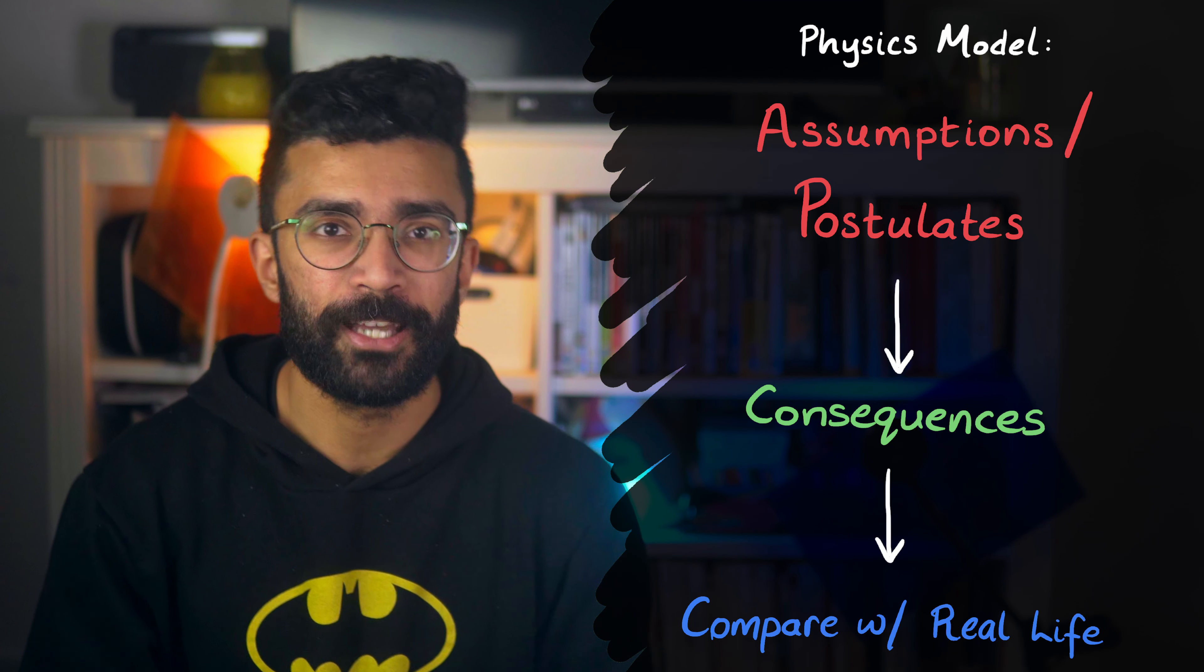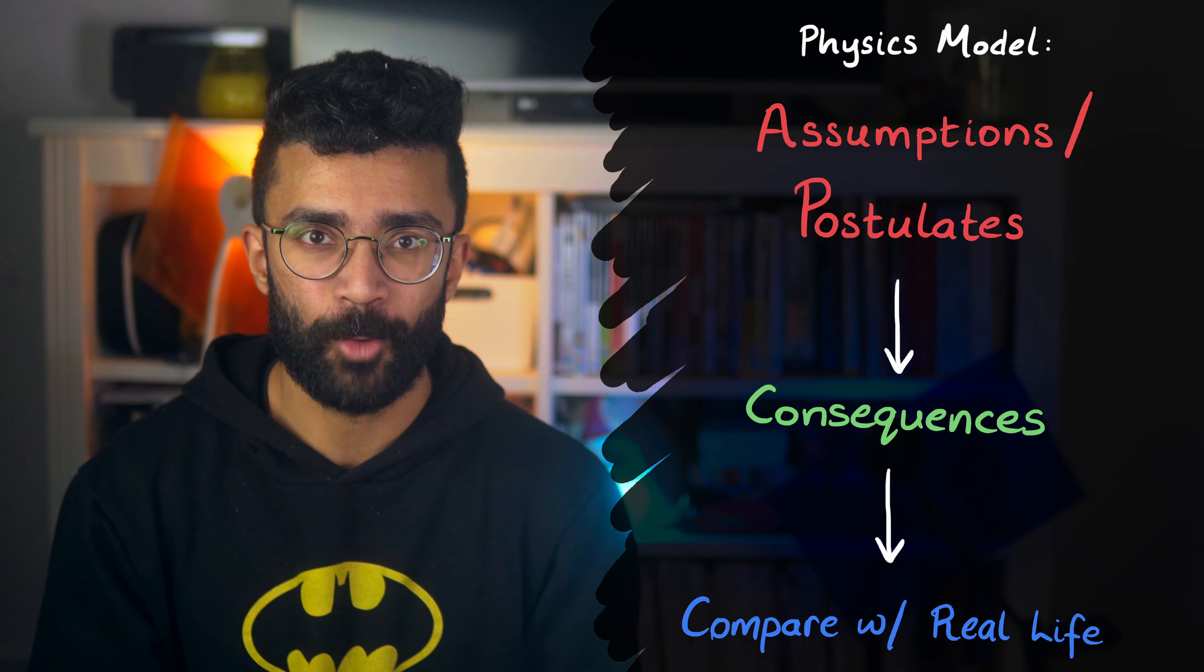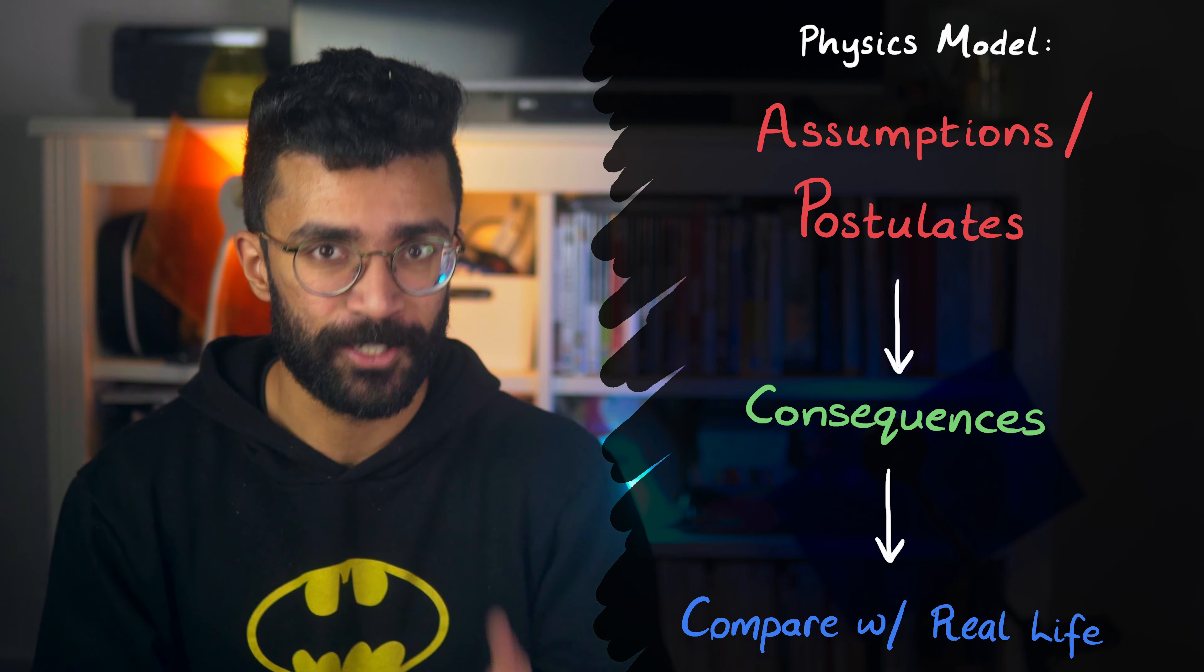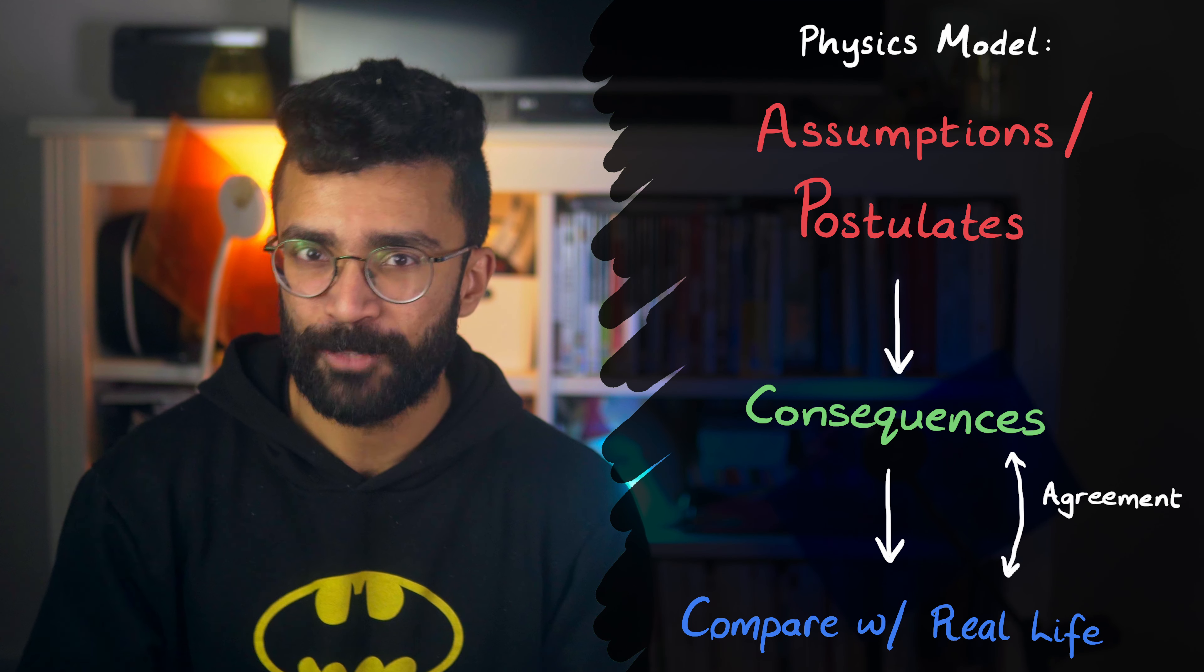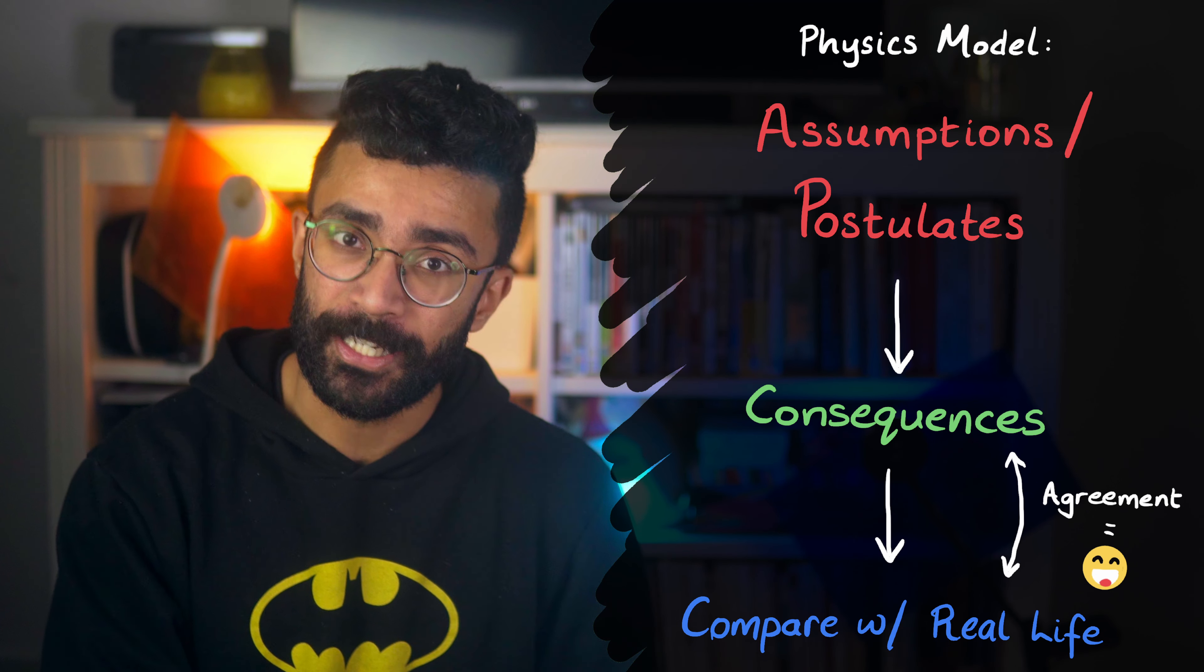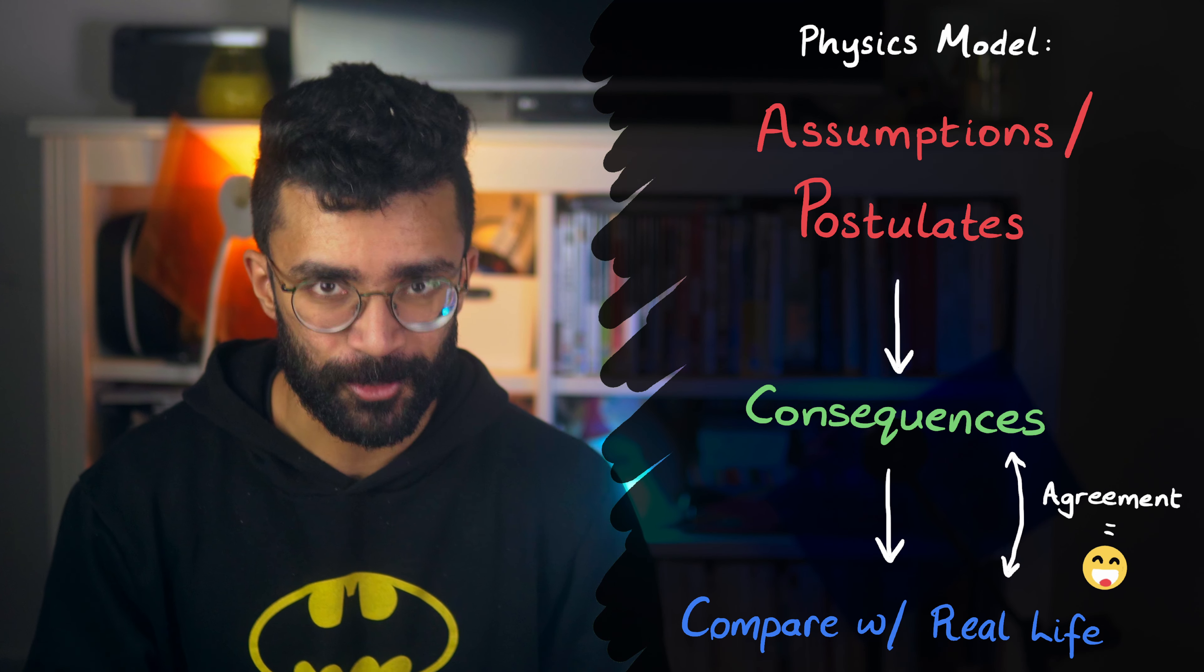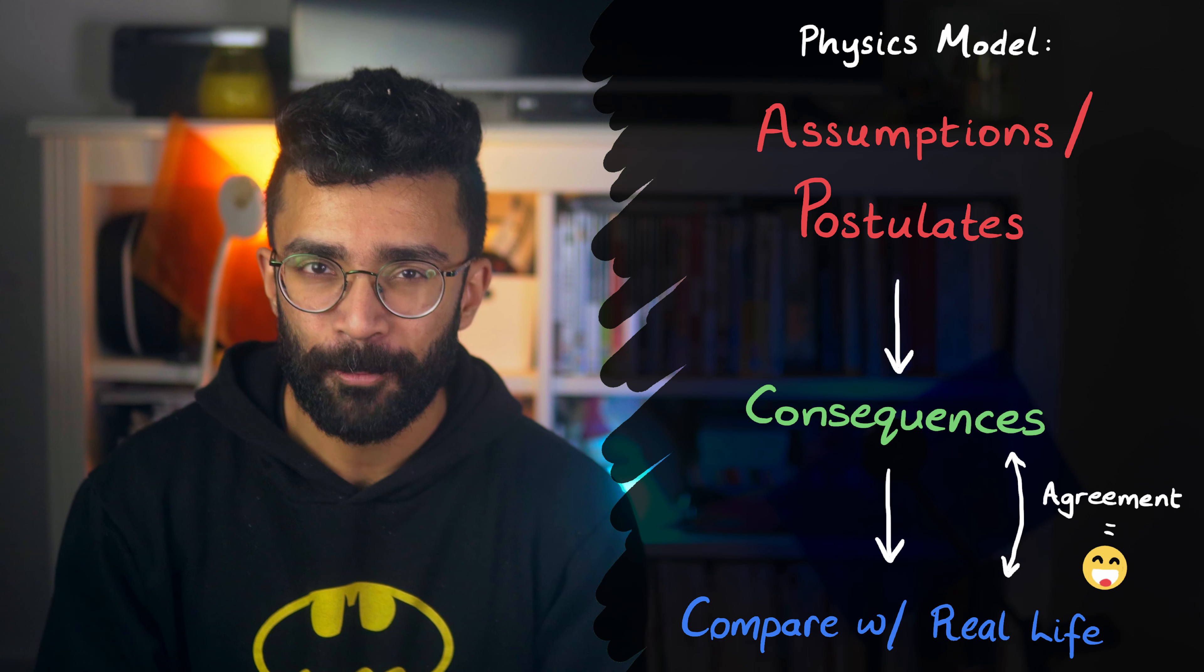Then we can do experiments to compare the predictions made by the math to real life, in order to figure out whether one of our theories is a good model for the universe. And if there's a good match between experiment and theory, then there's a pretty good chance that the assumptions we made at the beginning apply to the real universe and not just to our mathematical models. Great, so let's take a look at a couple of the assumptions or postulates of quantum mechanics.